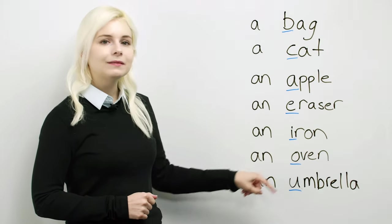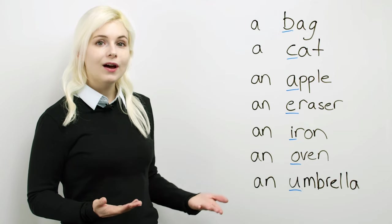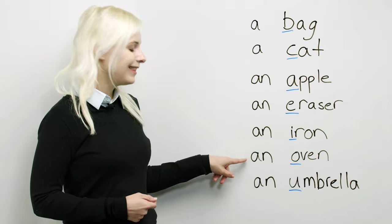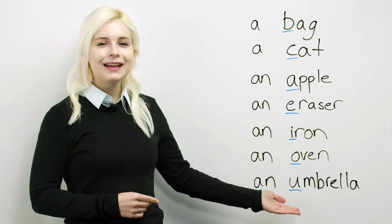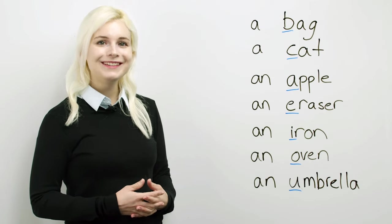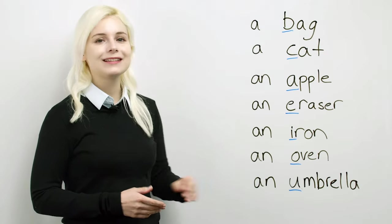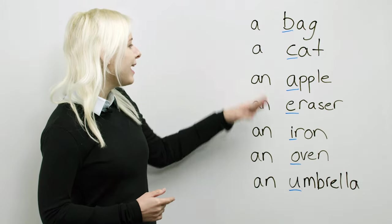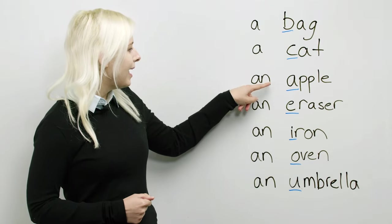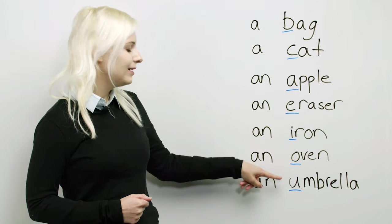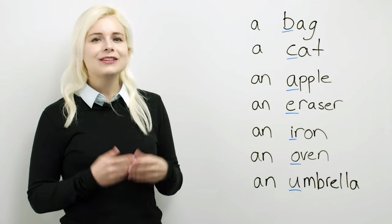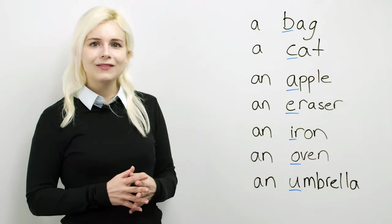Then an oven. Oven starts with an O, O is a vowel, this is also right. And finally, an umbrella. Umbrella starts with a U, U is a vowel, this is correct. If you look at it, it's the vowels A, E, I, O, U. So it looks like the rule is working very well.